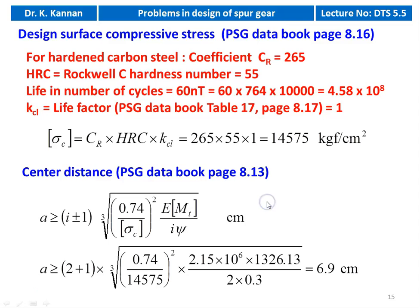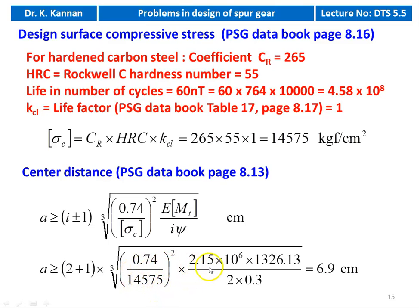Calculate center distance: A ≥ (i + 1) × ∛[0.74 / σc² × E × [MT] / (i × ψ)] = (2 + 1) × ∛[0.74 / 14,575² × 2.15×10⁶ × 1,326.13 / (2 × 0.3)] = 6.9 cm. Center distance A ≥ 6.9 cm.